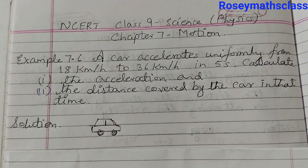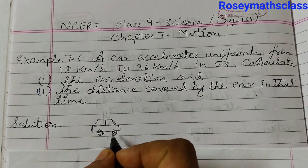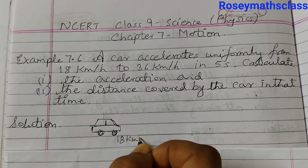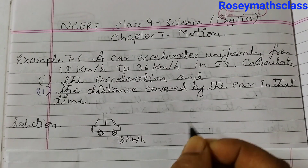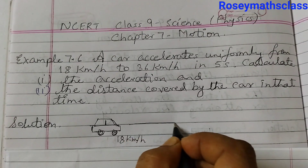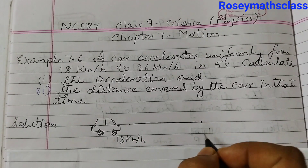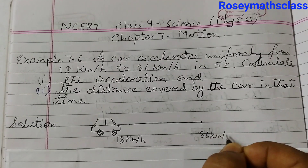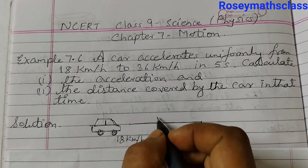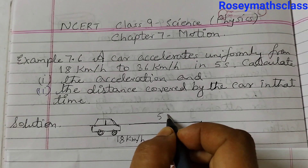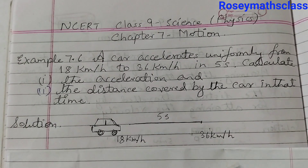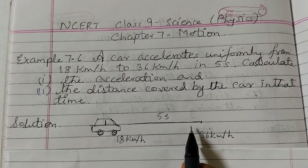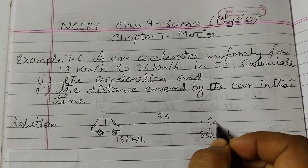We will just draw a rough sketch of that. This is the car moving — initially it's 18 km per hour, then it moves some distance, and then it's 36 km per hour. To cover this distance it takes 5 seconds. We need to find the acceleration and the distance travelled by the car.